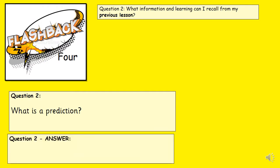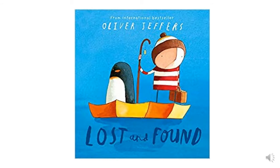What is a prediction? Have a think. A prediction is what you may know so far, like the front cover of a book or a sentence you may have read, to say what you think may happen next. For example, looking at this front cover of Lost and Found, I think the boy is going to lose his toy penguin and then find it in the sea. Why? Because there's two characters — there's a boy and a penguin, and they're on a boat in the middle of the sea.